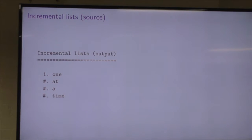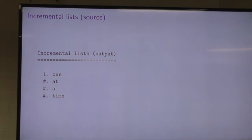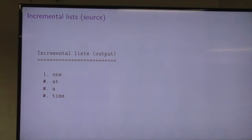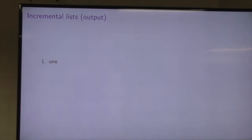You'll also notice the hashes — you can make the whole list just hashes and it'll start at one, which is sensible because it makes your source more maintainable. If you decide to add something, you don't have to go and renumber everything.